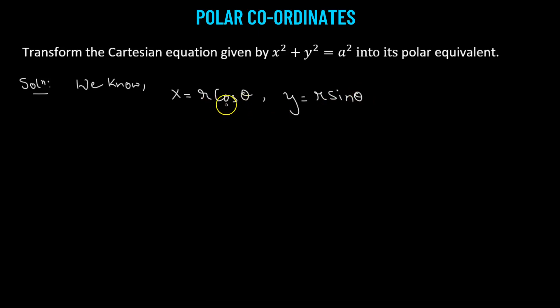So if we're going to substitute the value of x and y into the given equation, which is x squared plus y squared equals a squared. In place of x, we have r times cosine theta. We're going to square it and then add it to the square of r times sine theta. That equals a squared.